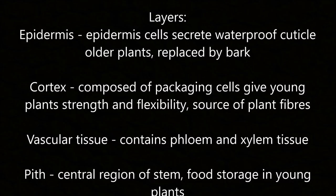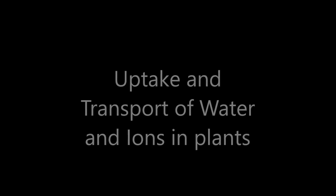Layers of the plant stem include the epidermis, whose cells secrete a waterproof cuticle (in older plants replaced by bark). The cortex is composed of packing cells giving young plants strength and flexibility. The vascular tissue contains phloem and xylem. The pith is the central region of the stem with food storage in young plants.